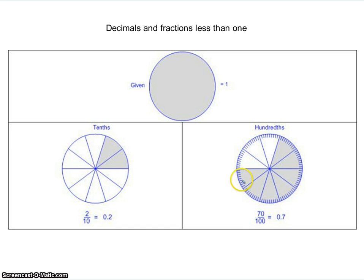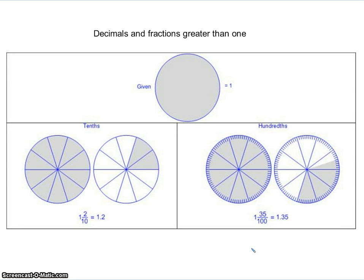If I want to do seventy hundredths, each one of these sections is worth ten hundredths. So going one, two, three, four, five, six, seven — those were tenths — and each of the little markings is a hundredth. So this would be seventy hundredths. Just like before, you can use these to model values greater than one whole. For one and two tenths, I need one whole circle and then two tenths of the next circle. For one and thirty-five hundredths, I use one whole circle and shade in thirty-five little markings — ten, twenty, thirty, and then five more makes thirty-five.